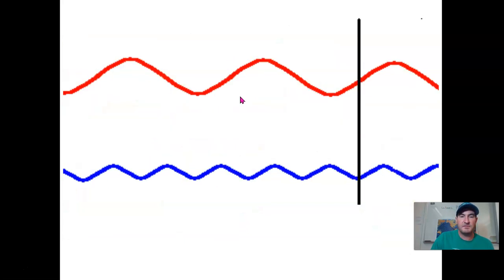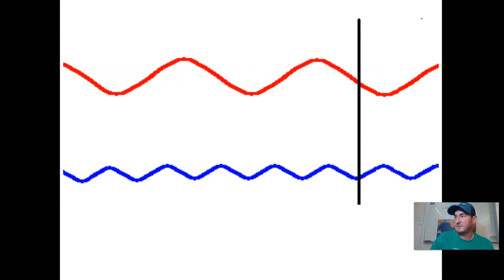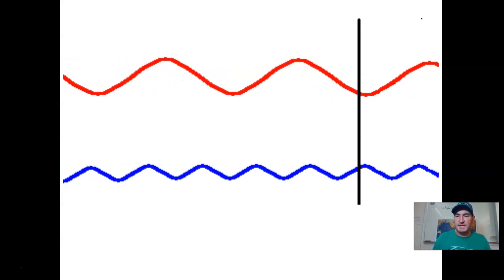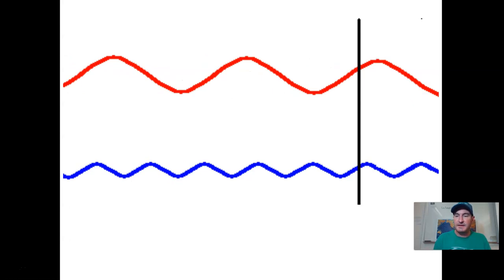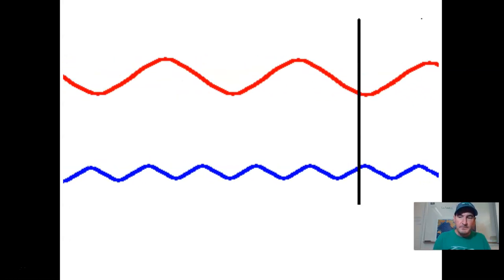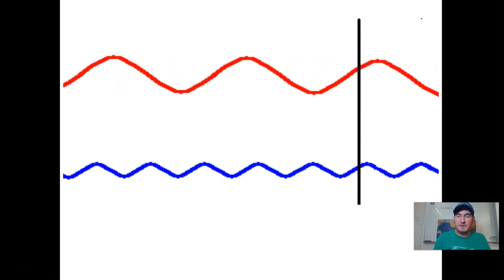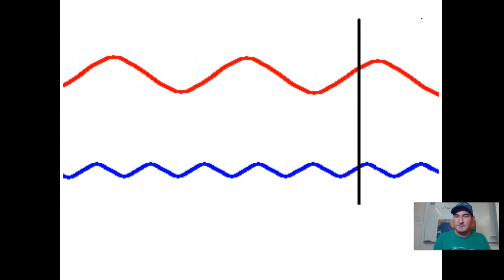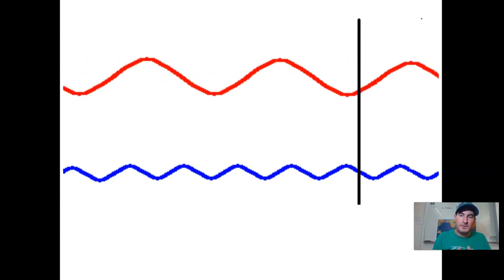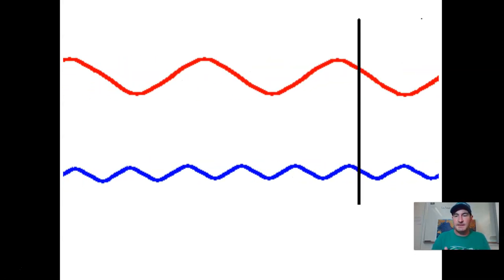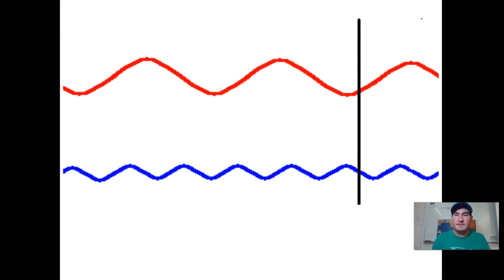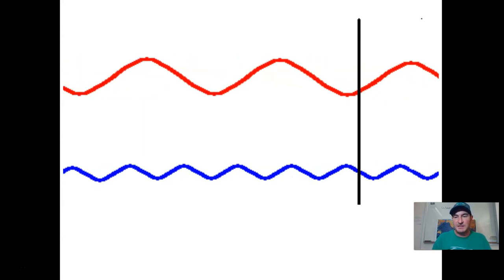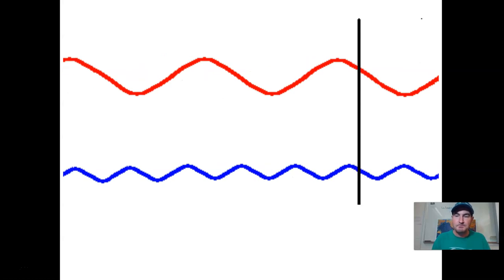Next we're going to talk about frequency. The first question is, what does frequency actually mean? If we think about how frequently something happens, we're talking about how often that thing occurs. The same is true when we talk about the frequency of a wave — we define it as how many cycles of the wave pass a certain point every second. We use special units for this called hertz, labeled Hz: capital H, lowercase z.